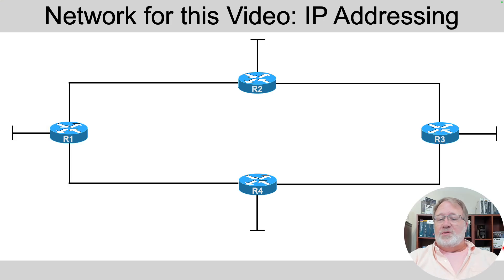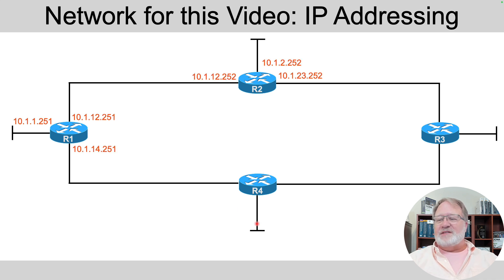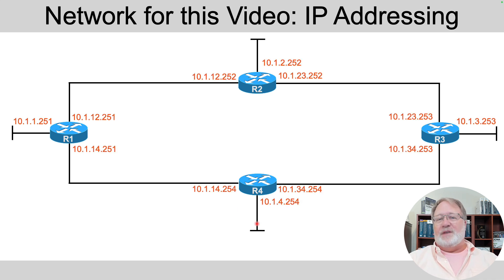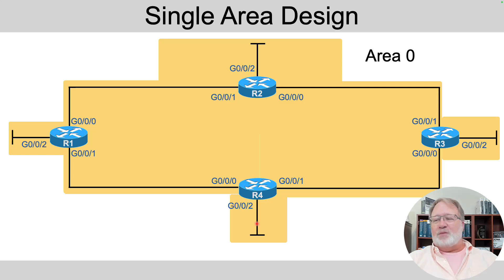For this video, we'll use this network. Each of the four routers has a WAN link to two other routers and a LAN link out to the side. They have these IP addresses as you see here. The IP addresses are configured and all the interfaces you see in the diagram are up and working. Then we'll have OSPF configured and all the links are placed in area zero, so it's a single area design with everybody in the backbone area.